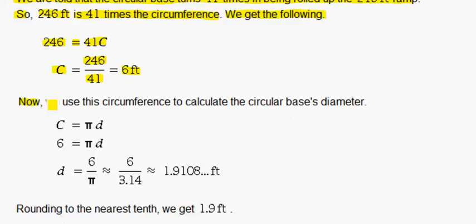Now, we use this circumference to calculate the circular base's diameter. Circumference equals pi times diameter. We have the circumference of 6 feet, and pi times d.